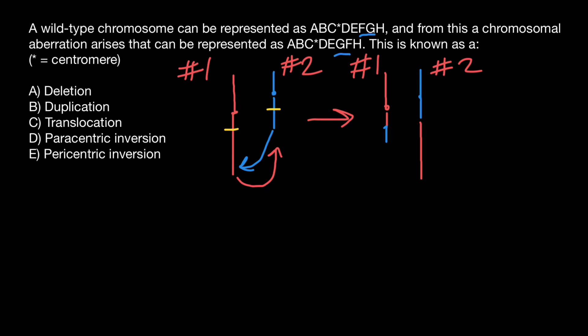In this case, this is reciprocal translocation. An organism that has such translocation should be phenotypically normal if during such translocation no major genes have been damaged.